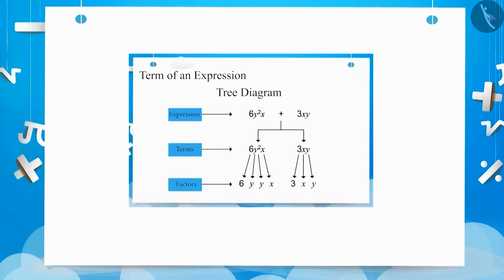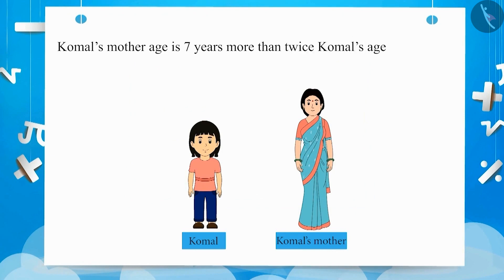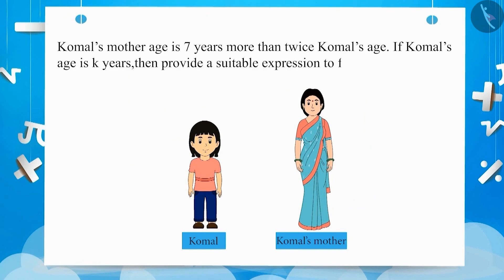You have already learned about algebraic expressions. Let's understand it better with the help of an example. Komal's mother's age is 7 more than twice her age. If Komal's age is k years, then provide a suitable expression to calculate her mother's age.